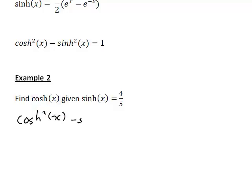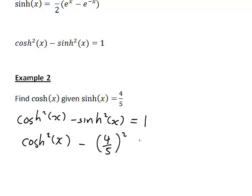Cosh squared x minus sinh squared x equals 1. If we know one of them, we should be able to sub it in and find the other. Here cosh we don't know, but we're given sinh of x is 4 fifths, so sinh squared x will be 4 fifths squared.